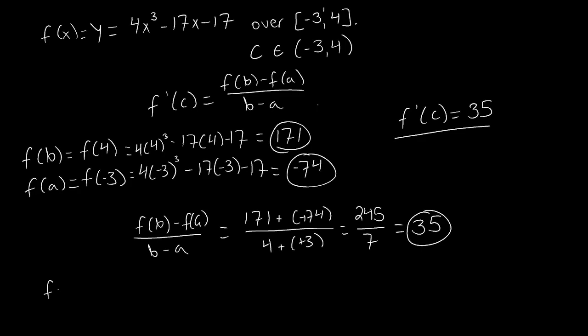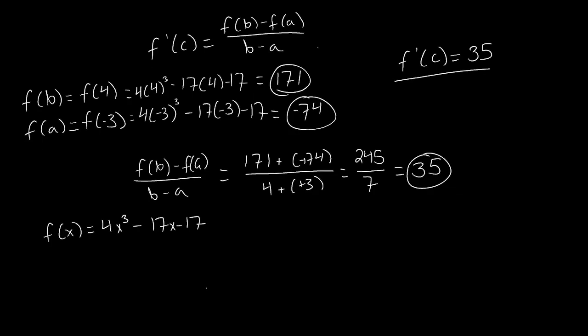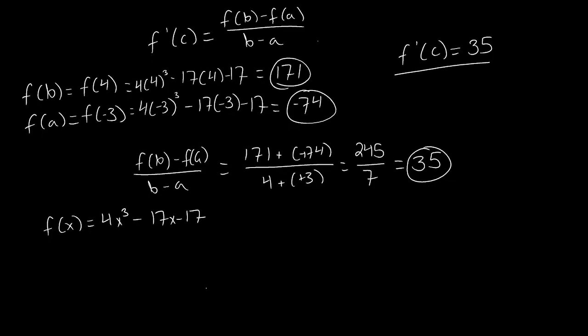So our original function is f(x) = 4x³ - 17x - 17. If we take the derivative of this, all we really need to do is use the power rule. So using the power rule on each term individually, 4x³ becomes 12x² minus the derivative of 17x, which is 17. And the derivative of -17 is zero. So this is our derivative.